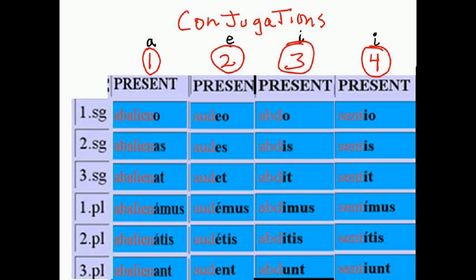Third conjugation, dominant I sound. The end. Eo, is, it — emes, itis, ient. The end.